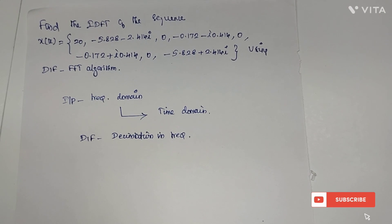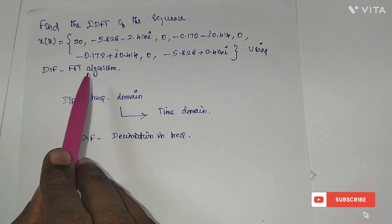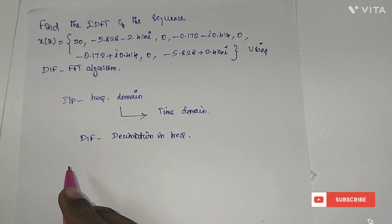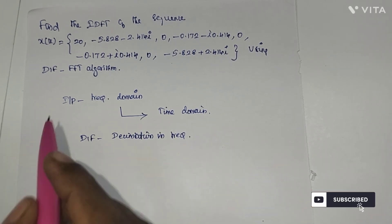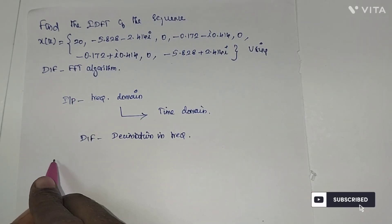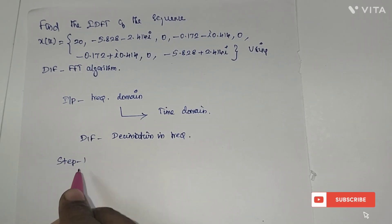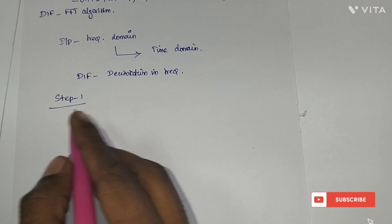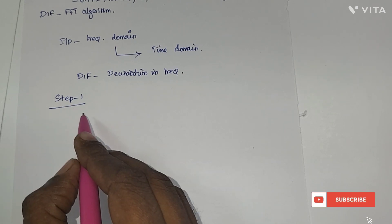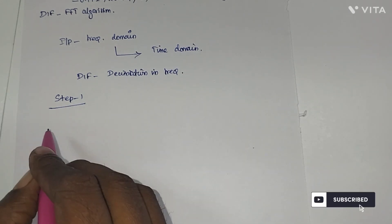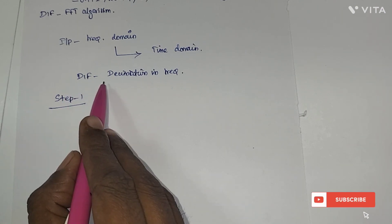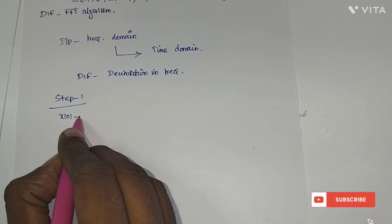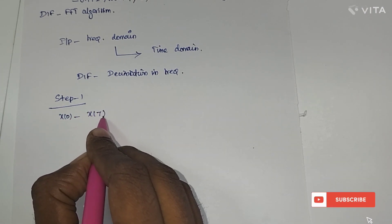There are two steps involved in computing the IDFT using the DIF FFT algorithm. Step one: you have to write the input sequence in normal order. In the case of DIT, the input sequence is written in bit-reversal order, whereas in the case of decimation in frequency, the sequence should be in normal order from x(0) to x(7).